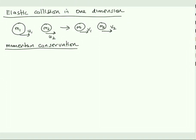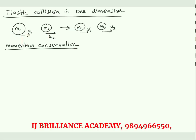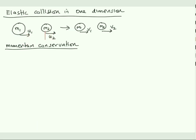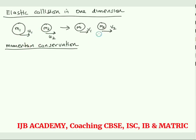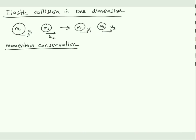In this video we are going to discuss elastic collision in one dimension. We have two bodies, mass one and mass two, traveling with velocities u1 and u2. They collide, and after the collision they move with velocities v1 and v2. This is the before-collision and after-collision scenario. For elastic collision, both momentum and kinetic energy are conserved.